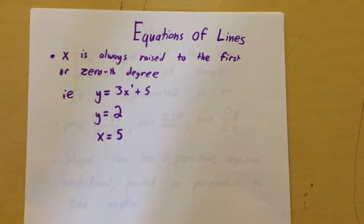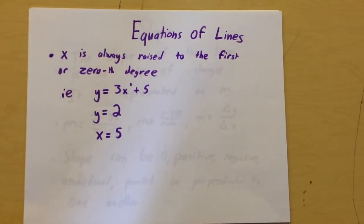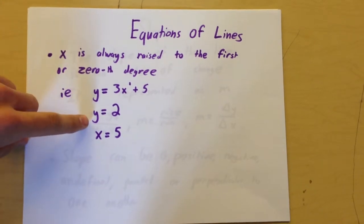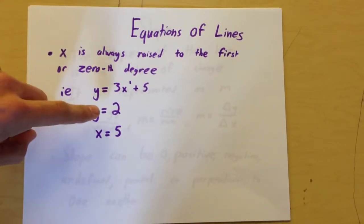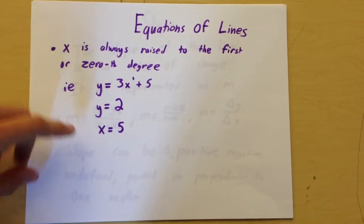Equations of lines. X is always raised to the first or zero-th degree in a linear equation. Like the examples here where X is raised to the first degree, X is raised to the zero-th degree because we don't see it because it's acting as one, and here we have X to the first degree again.